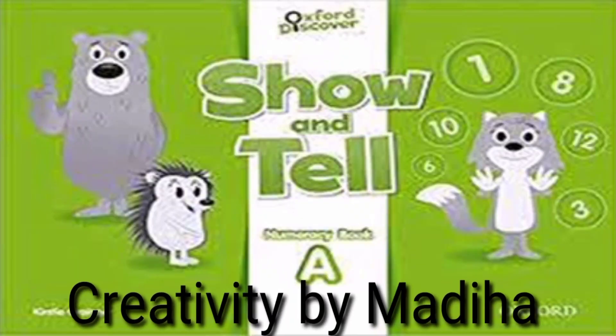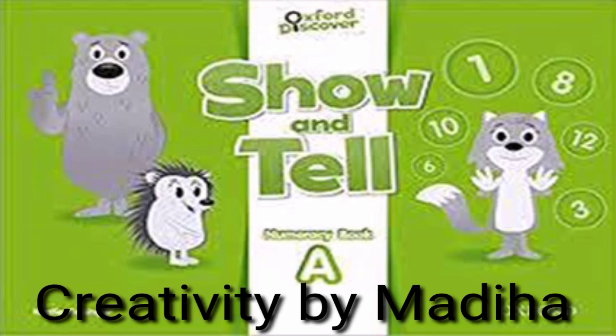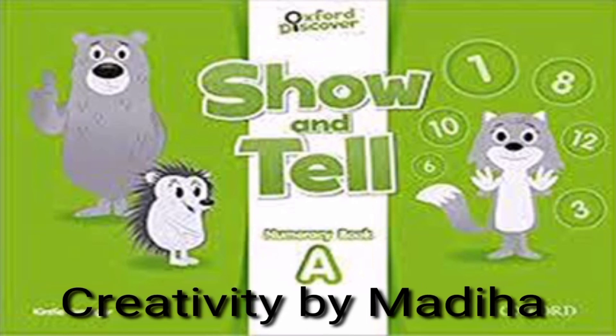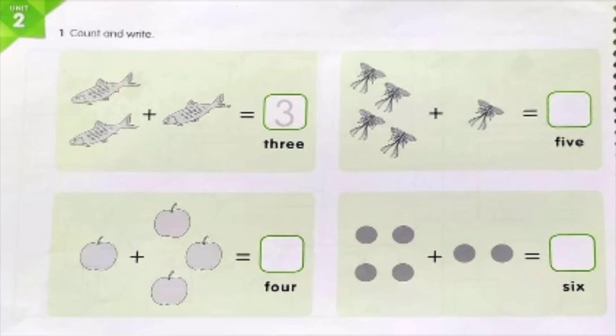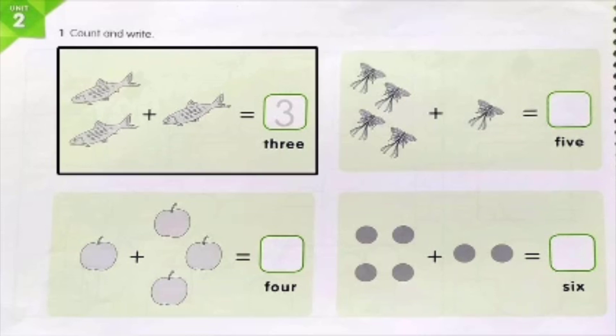Our lesson today is from the book Show and Tell Numeracy Book A, Unit 2, page number 14. The title of the page is 'Count and Write.' It's the revision of the addition sums that you have done in your notebooks. Look at the first picture — you can see fish in this picture. In the first part, let's see how many fish there are.